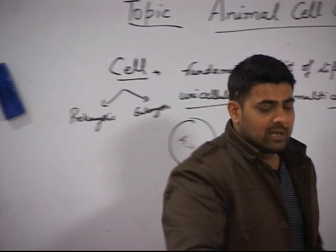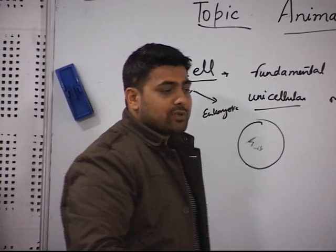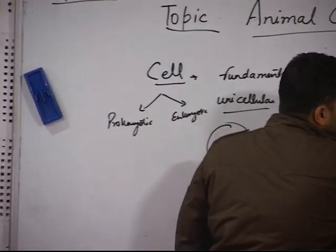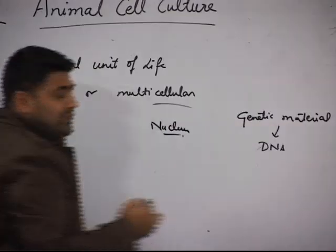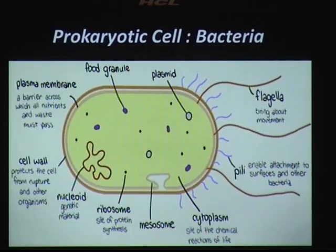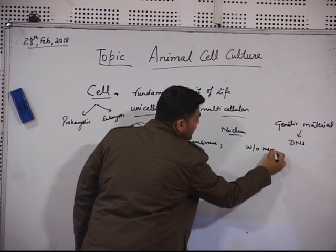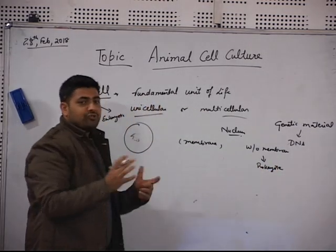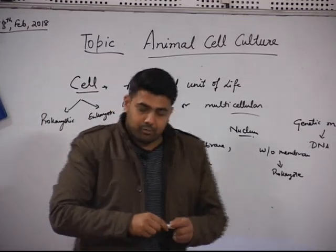Prokaryotic cells can be distinguished from eukaryotic cells based on the presence or absence of a nucleus. Every cell has genetic material which is mostly DNA. Whether that DNA is present bound by a membrane or without a membrane is the key distinction. Prokaryotic cells do not have a membrane-bound nucleus or membrane-bound genetic material, whereas eukaryotic cells have genetic material bound within a prominent membrane structure.